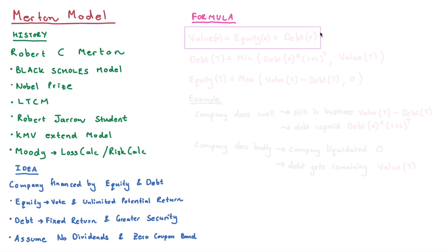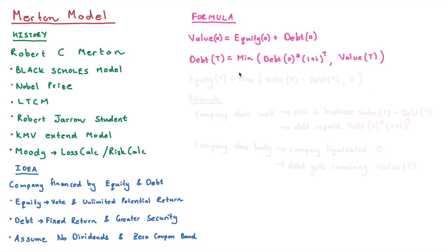The formula states that the value of the company at time zero — that is, the assets of the company at time zero — equals the equity at time zero plus the debt at time zero. Looking at a future date T, the future value of debt D(T) equals the minimum of either the original debt times the interest rate (since it's a zero-coupon bond) or the value of the company at that future time. Equity at time T equals the maximum of either the future company value minus the future debt, or zero.